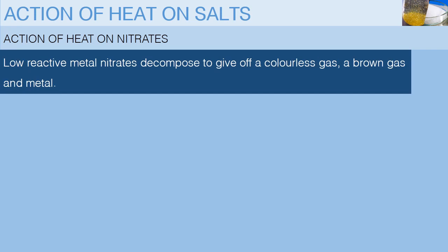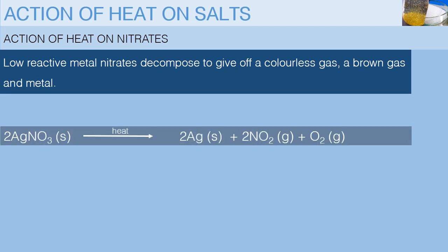And finally, metals that are low in the reactivity series form nitrates that decompose to give off a colorless gas, a brown gas, and a corresponding metal. For example, silver nitrate decomposes on heating to give silver metal, nitrogen 4 oxide, and oxygen gases.